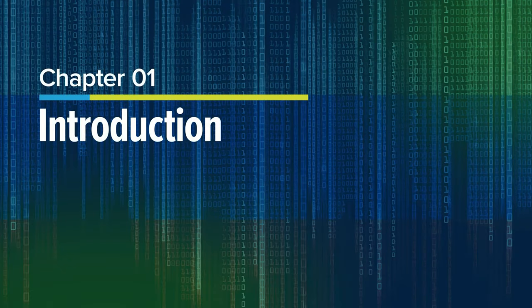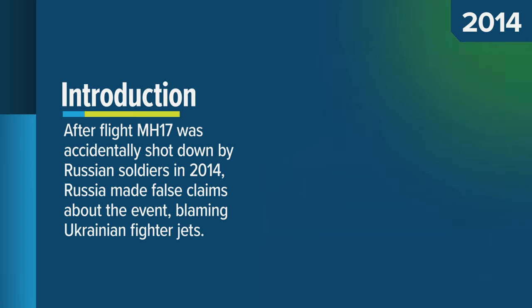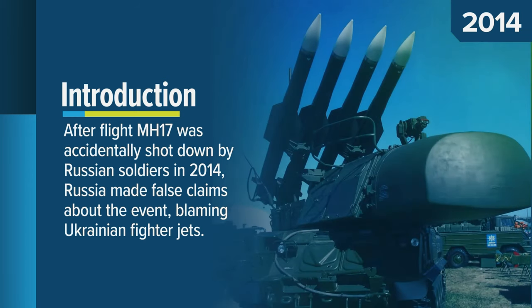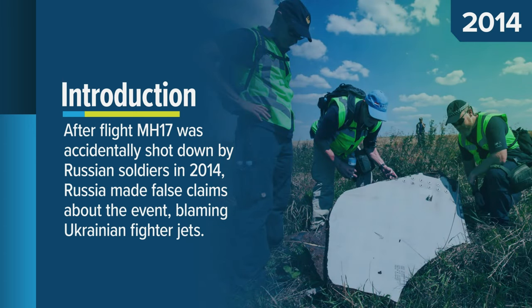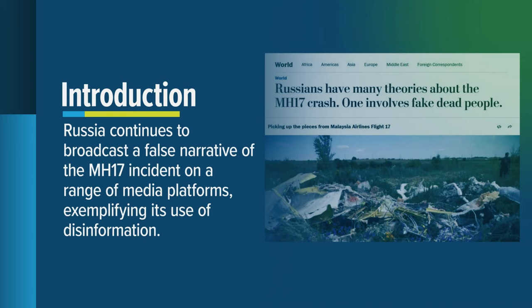Chapter 1: Introduction. On July 17, 2014, Malaysian Airlines Flight MH17 was shot down over Ukraine, killing all 298 people on board. The plane was downed by Russian soldiers who accidentally shot it during the invasion of Ukraine. Following the accident, the Russian government and media outlets made false claims about the event, saying Ukrainian fighter jets shot down the plane, that the downing was a false flag attack to vilify Russia, and other lies. These narratives were broadcast on a range of media platforms so that Russia could provide alternative explanations without taking responsibility.